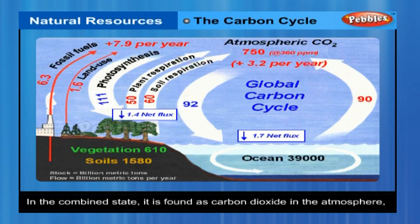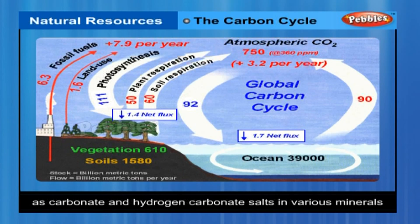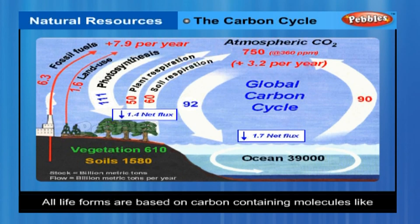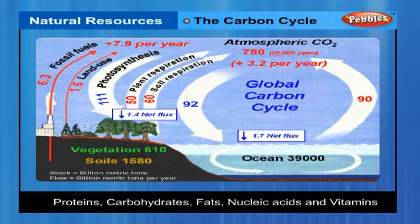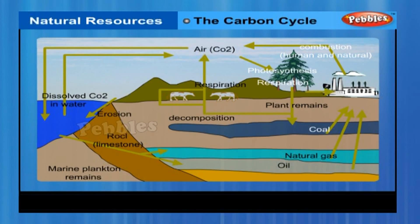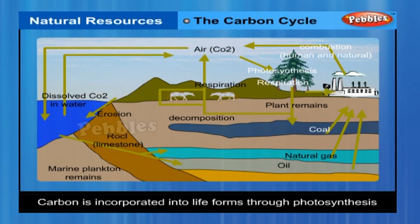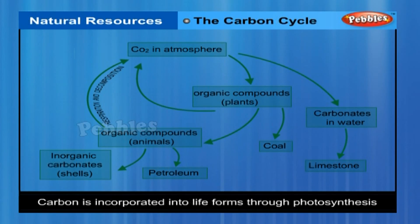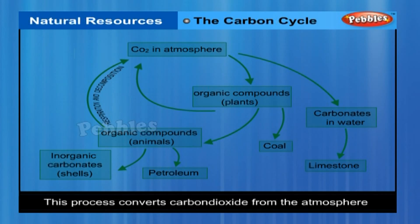In the combined state, carbon is found as carbon dioxide in the atmosphere, as carbonate and hydrogen carbonate salts in various minerals, while all life forms are based on carbon-containing molecules like proteins, carbohydrates, fats, nucleic acids, and vitamins. The endoskeletons and exoskeletons of various animals are also formed from carbonate salts. Carbon is incorporated into life forms through the basic process of photosynthesis, performed in the presence of sunlight by all life forms that contain chlorophyll. This process converts carbon dioxide from the atmosphere or dissolved in water into glucose molecules.